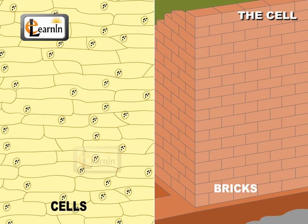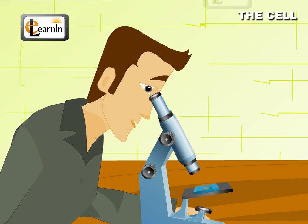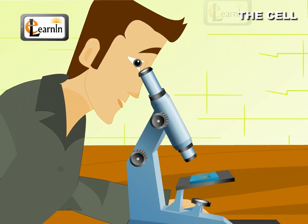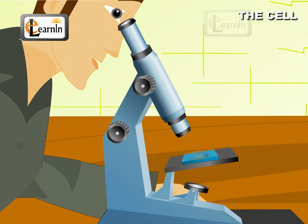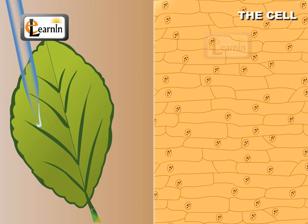However, cells are more complex structures, unlike bricks. The egg of a hen is the best example of a cell which can be seen by the naked eye. Scientists observe and study living cells using microscopes which can magnify objects. Dyes or stains help in studying a cell in detail by coloring the parts in a cell.